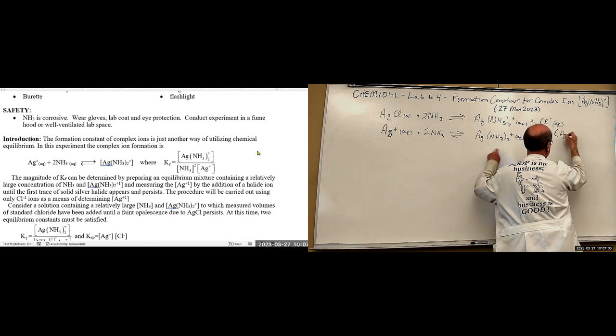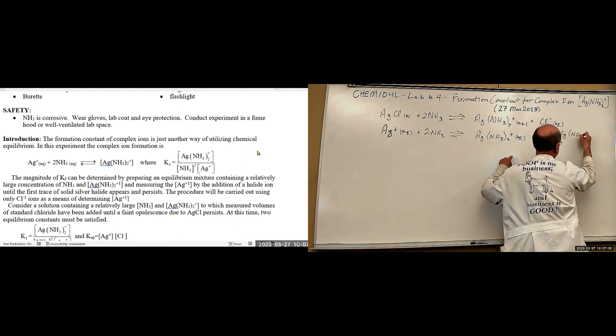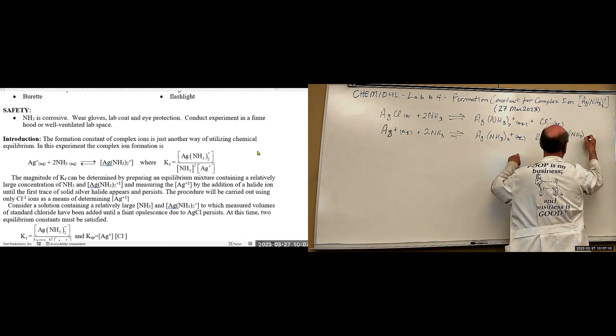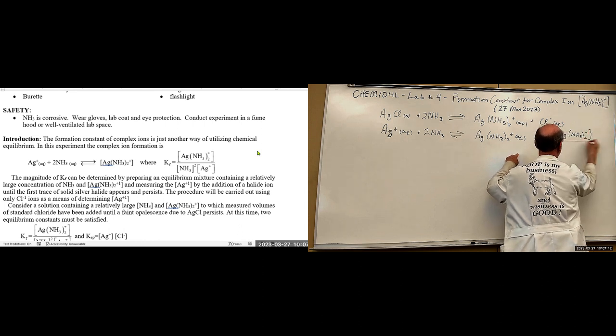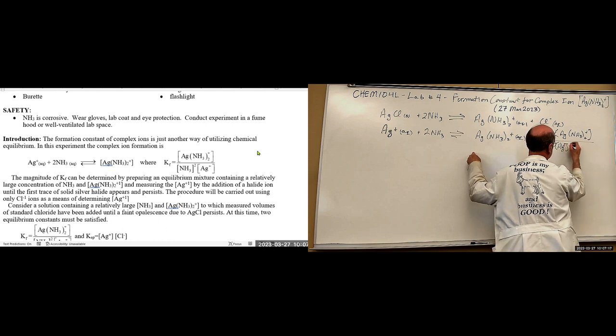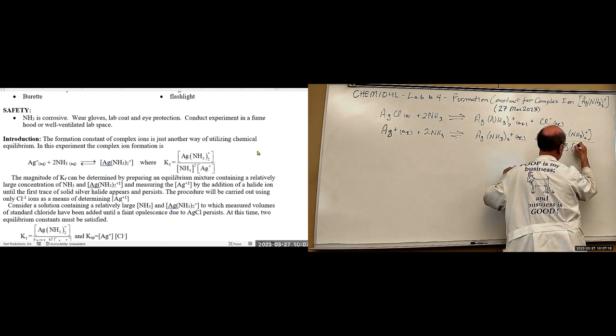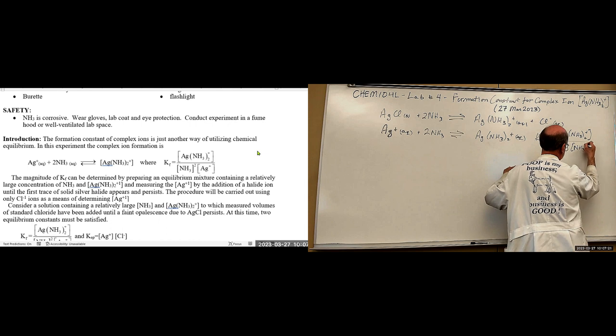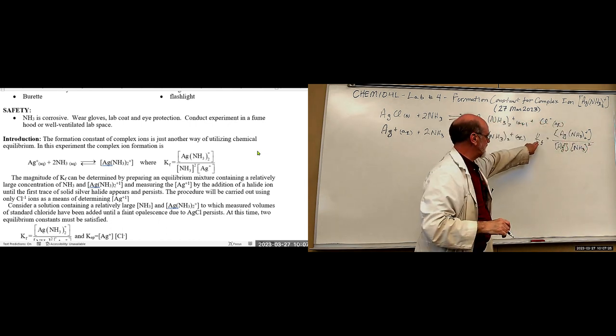So, it's going to be complex ion, and then we've got silver in the denominator, and ammonia in the denominator squared. That's what we're getting at. That's what we're after, this K.